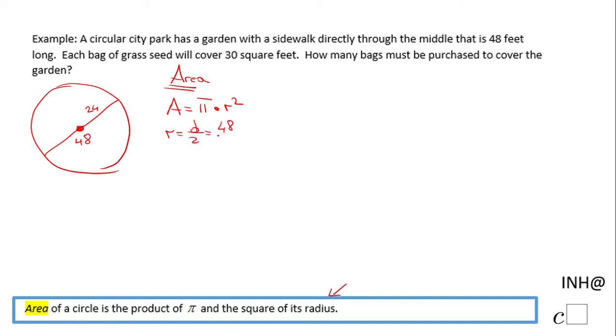Now we can go back to the area formula and find this area: π times 24 squared. I'm going to keep the answer in π for a while, but I'm going to have to square 24, and that is 576. So the area of this circular garden is 576π square feet, and that is the first step.